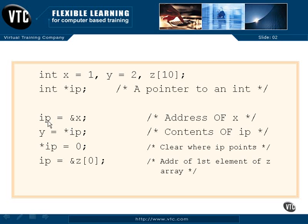We know that to be a 1. This says that y is equal to the contents of ip. We know that ip is set to the equal to the address of x. So this will take what is in x, which is a 1, and put it into y.